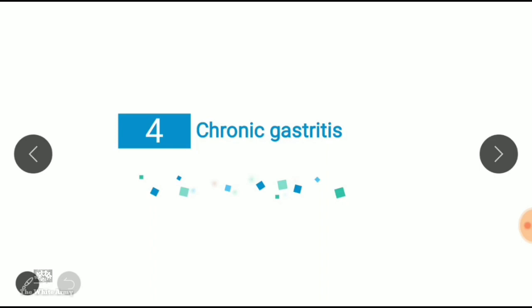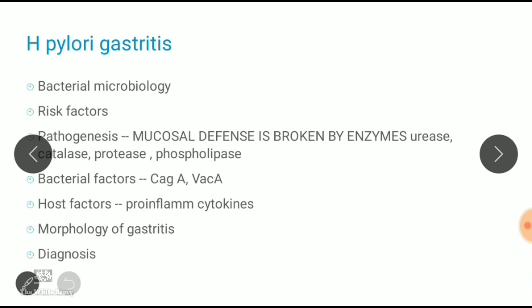Chronic gastritis is commonly due to H. pylori and autoimmune causes, but may also result from radiation injury, chronic bile reflux, mechanical injuries, amyloidosis, or graft-versus-host reaction. Patients mainly complain of nausea and upper abdominal pain. The key clinical difference is that acute gastritis symptoms are severe, while chronic gastritis symptoms are less severe but more persistent.